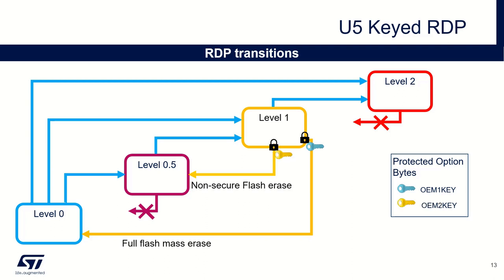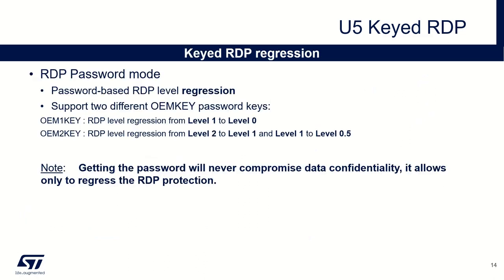We have a second possible key: the OEM2 key. This one allows to control the RDP regression from level 1 to level 0.5. And additionally, this one also controls the RDP regression from level 2 to level 1. In such a configuration, level 2 is no more a final state — only if you know the key value can you reopen a closed device. To sum up this functionality, it's a kind of password-based RDP level regression. We have two possible keys: the OEM1 key, which controls the RDP level regression from level 1 to level 0; and the OEM2 key, which controls the RDP level regression from level 2 to level 1, and also from level 1 to level 0.5. Those values only control the capability of regression, but don't change the protection of the flash content regarding the legacy mode.